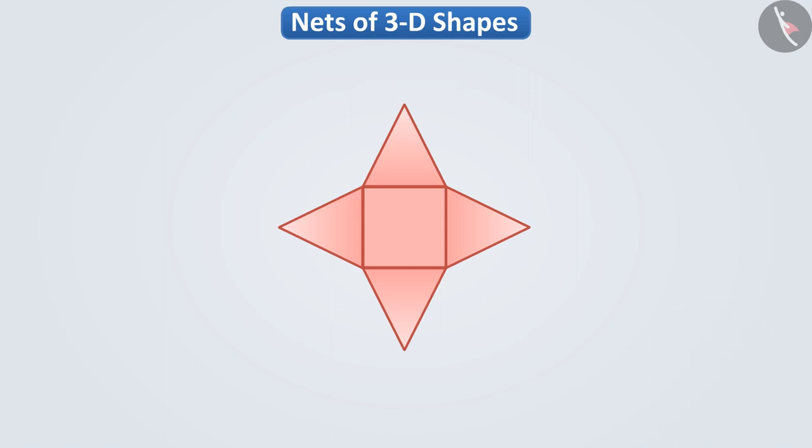Let us tell you, there are a total of five faces in this net, in which there is one square and the remaining four faces are triangular. Together, we also see that there is a triangle on each side of the square.